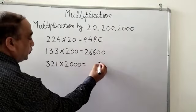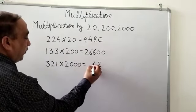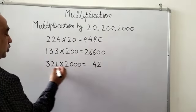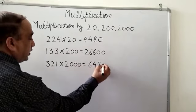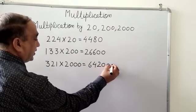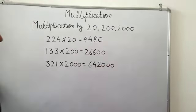So 2 ones are 2, 2 twos are 4, 2 threes are 6, and now we will put these three 0s in our answer and your answer will become 642000.